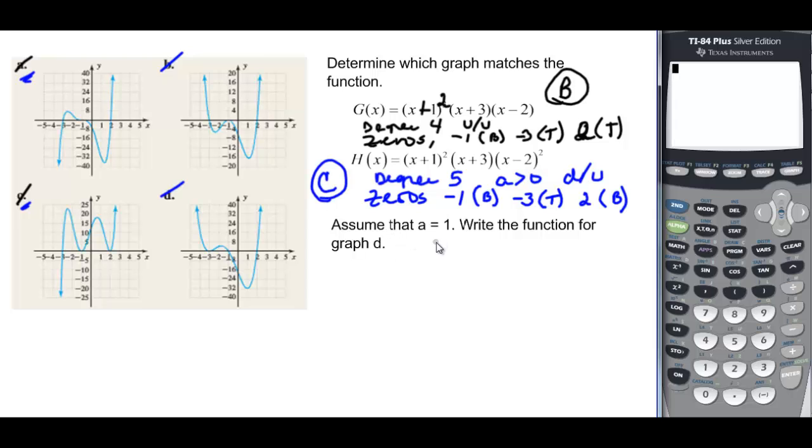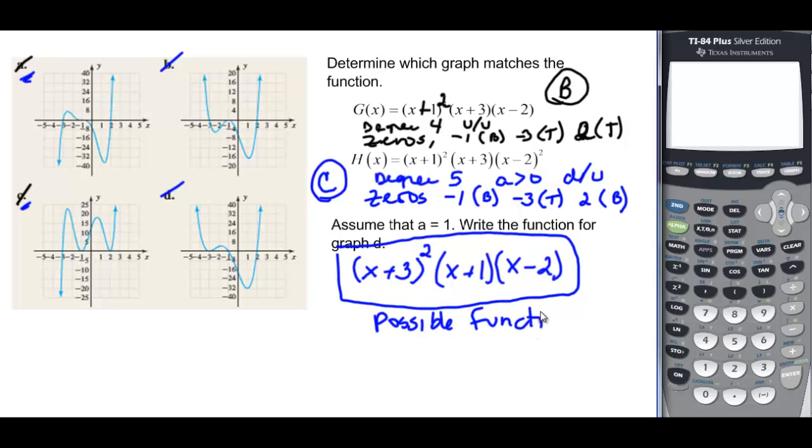Then it says, assume that a is 1, so we don't have to worry about the a's. Write the function for the graphed d in the same form, factored form. Well, I've got that x plus 3 at negative 3, and it bounced, so we'll say that's squared. And then we've got our x plus 1 to be that negative 1, and it goes through, so we'll just leave it as one factor. And then we've got our x minus 2 at positive 2, and it also goes through, so this would be a possible function. And I say possible because we're just thinking the minimum degree and those kinds of things.